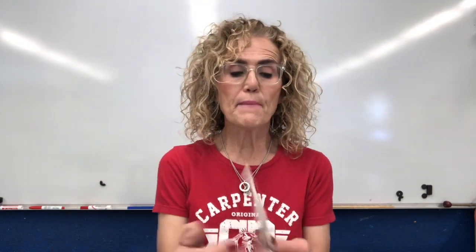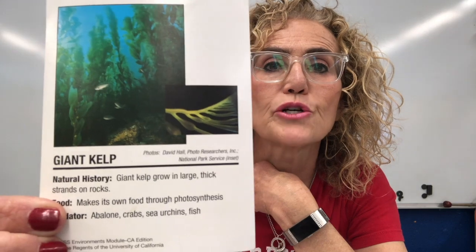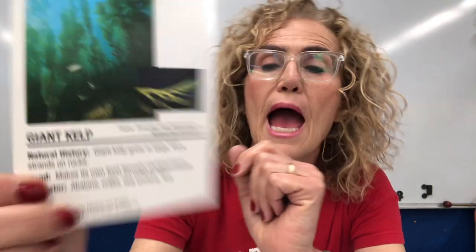Each one of you got a little packet of cards like this, and there were about four different environments that I sent home — one was a kelp Monterey Bay kelp forest, then there was Mono Lake, a wood system, and one in a pond. I'd like you to take these cards out and look at them. On each card there is a picture and the name of the organism, and it talks about its history, its food, and whether it's a predator or not, or what the predator is of this organism.